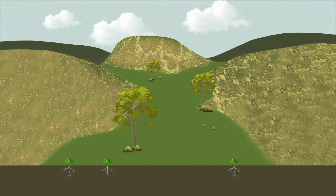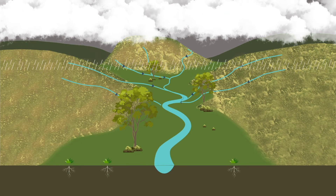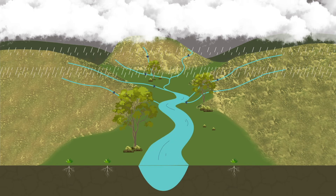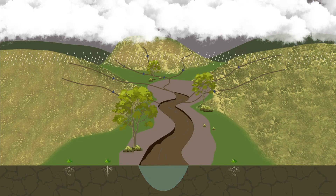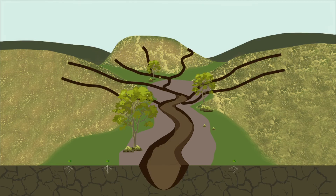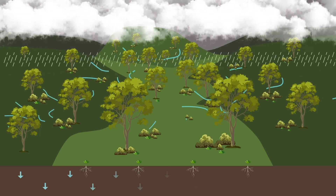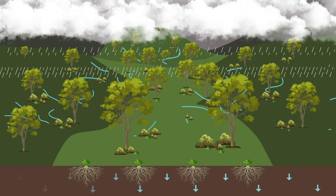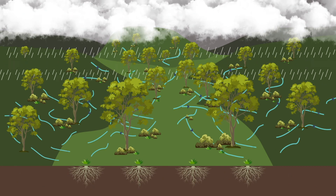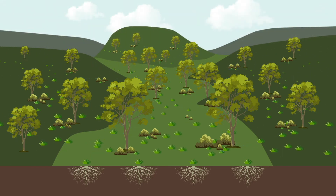Gullies form when water cannot penetrate the earth and instead concentrates in narrow pathways between grass or along animal trails. As the speed of the water increases, it becomes more erosive, cutting deeper and deeper into the soil. When water can infiltrate into the earth due to good soil texture and organic matter, it rehydrates the land and minimises the likelihood of gullies forming.